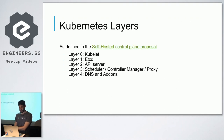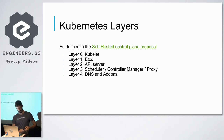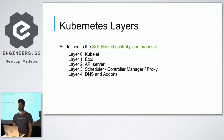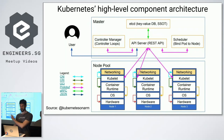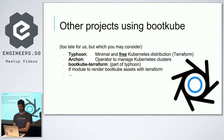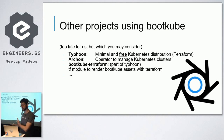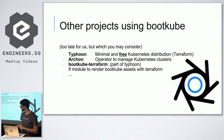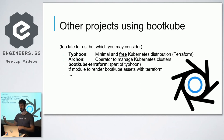The next part is about the self-hosted control plane proposal. Given I have about 10 minutes left, I'm going to skip those slides. I do want to highlight a couple of very interesting projects using this advanced bootstrapping approach — one is Typhoon, which is a minimal and free Kubernetes distribution that uses Terraform with custom Terraform modules that prepare Bootkube.